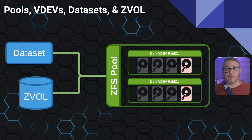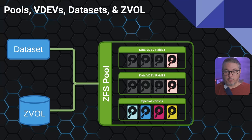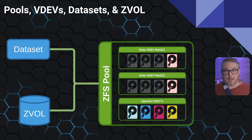Datasets and ZVALs live within a ZFS pool. That pool can have a single VDEV or multiple VDEVs. You can also have it living within multiple VDEVs along with special VDEVs, such as a cache drive or a metadata drive. Those special VDEVs are not assigned to a dataset or a ZVAL — they're used within the pool. The datasets and ZVALs you build on top of the pool, which you can have many of in any combination, take advantage of the underlying features built within that ZPool.